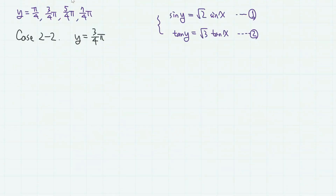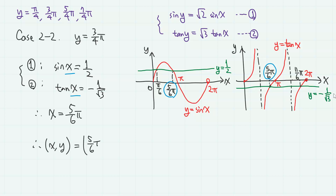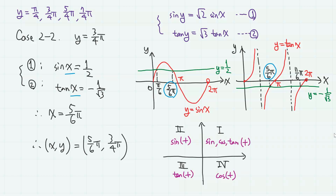Next, when y equals 3π/4, equations 1 and 2 become sine x equals 1/2 and tangent x equals minus 1 over square root of 3. The value of x satisfying both is x equals 5π/6, so we have the root (5π/6, 3π/4). You can find the quadrant of angle x using the CAST rule: on the first quadrant, sine, cosine, and tangent are all positive; on the second quadrant, only sine is positive; on the third, only tangent is positive; and on the fourth, only cosine is positive. Here, sine is positive and tangent is negative, so x is a second-quadrant angle.